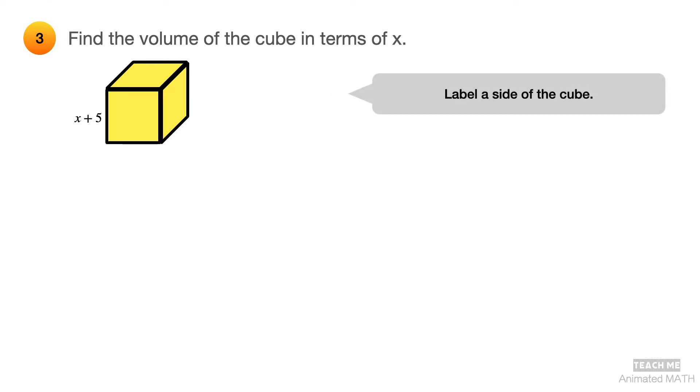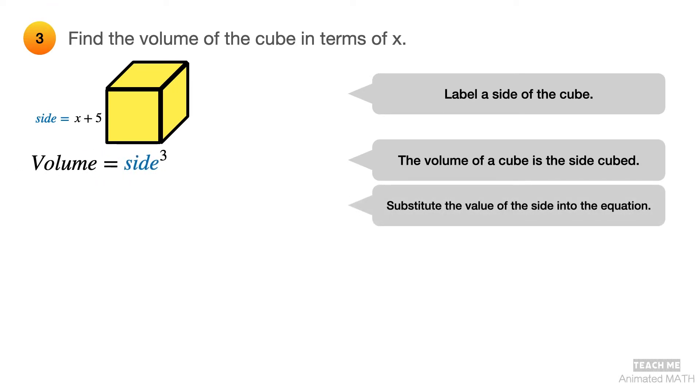Label the given side of the cube. From geometry, since all sides of a cube are equal, its volume is equal to the cube of the value of its side. Substitute x plus 5 for the side in the volume equation. The equation can be written as x plus 5 times x plus 5 squared. Now, do you recognize a pattern we can use?